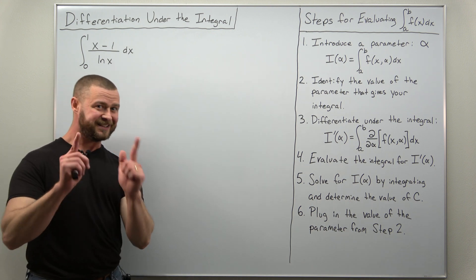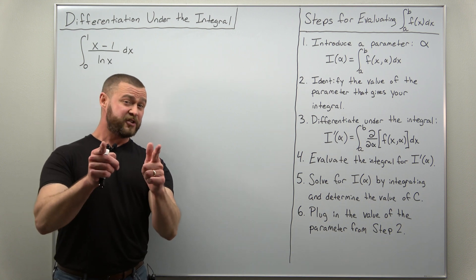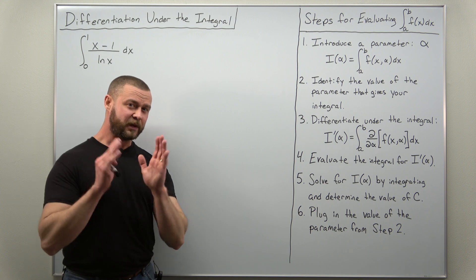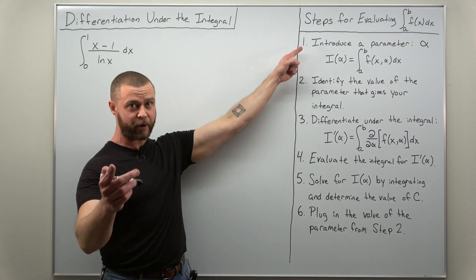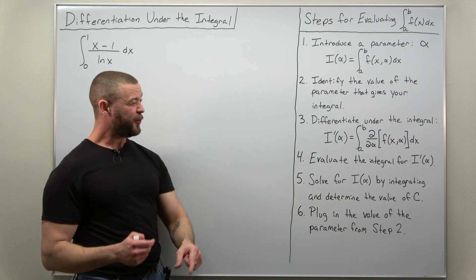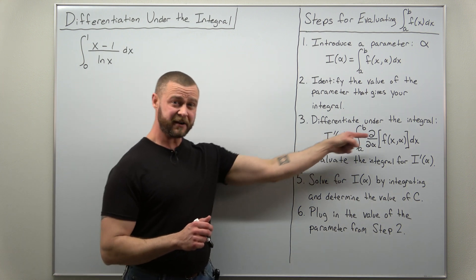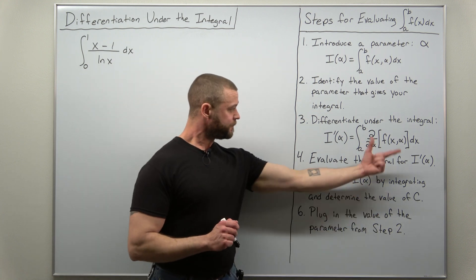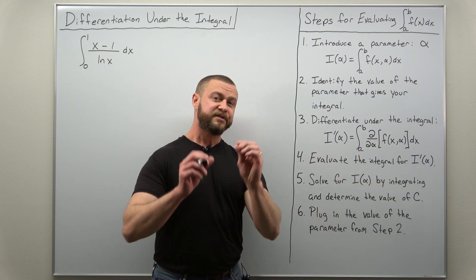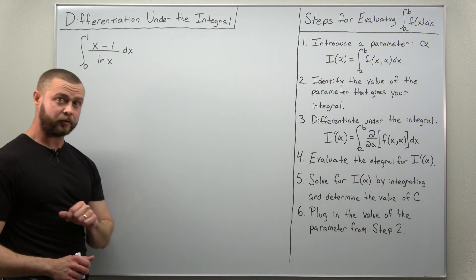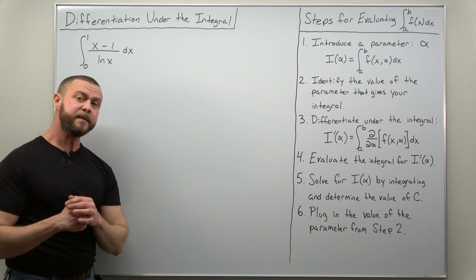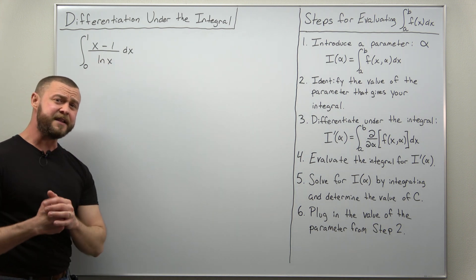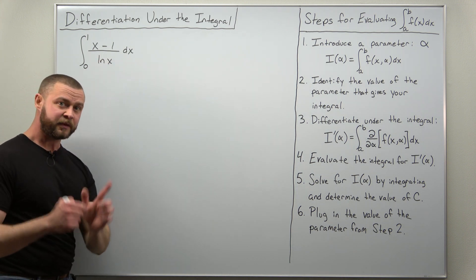This is where we use differentiation under the integral, which is an integration trick. Essentially, we introduce a parameter — an extra variable — and we do it such that when we differentiate with respect to that parameter, something simplifies. For this problem, we want to get rid of that natural log of x factor.